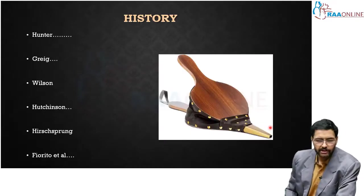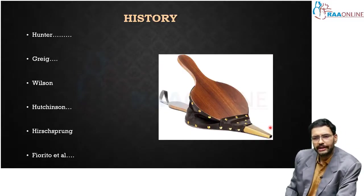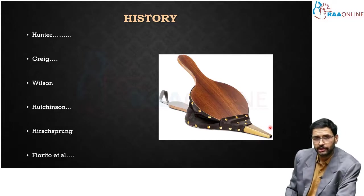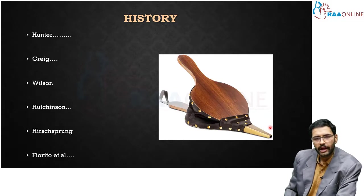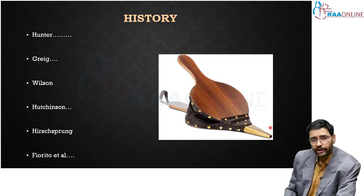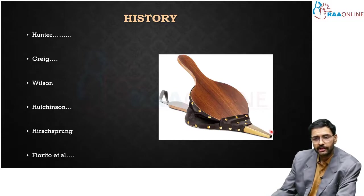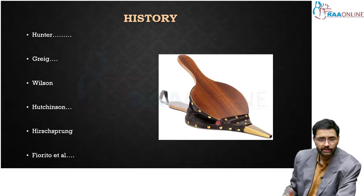Any pediatric surgical topic would be incomplete without a detailing of the history behind the pathology and the evolution of the management techniques. Hunter was the first person to describe this condition called intussusception, and Grigg was a very important personality who is said to have reduced intussusception using instruments called hand bellows, which were generally used in chimneys.